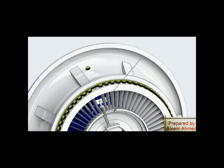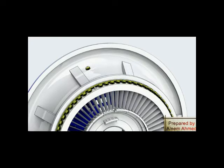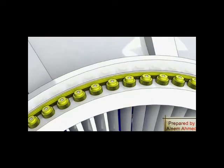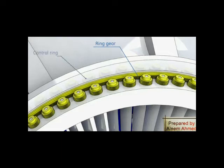Each blade stem is inserted into a hole machined on the inlet casing, and each four of them are supported from below by one inner segment. A pinion gear is installed to each blade stem and is keyed into position. These pinions are rotated by a ring gear which is assembled to the control ring.